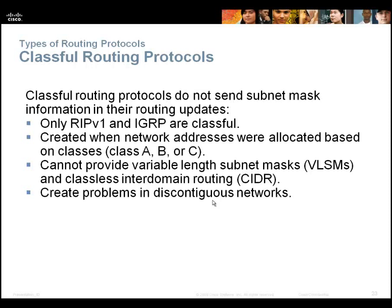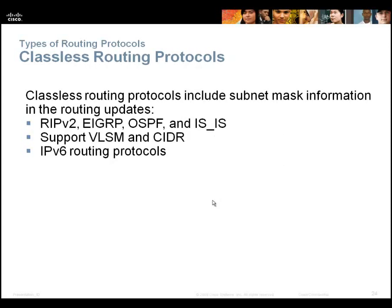Classful routing protocols only route to classful IP addresses — A, B, and C — and don't send subnet masks. We haven't used them in at least 15 years. We use classless routing protocols: RIP version 2, EIGRP, and OSPF. All three support IPv6, VLSM, and CIDR. Note that RIP version 2 isn't an IPv6 routing protocol — RIPng is. OSPF version 2 doesn't support IPv6, but OSPF version 3 does. They all have variations that support IPv6.